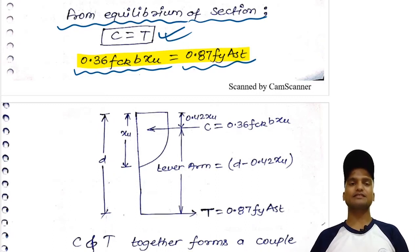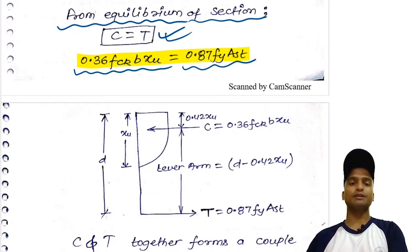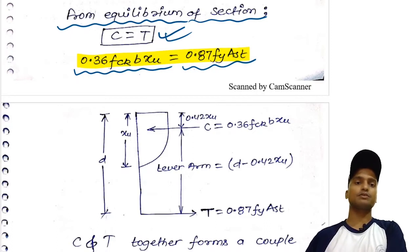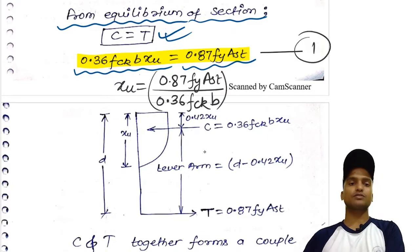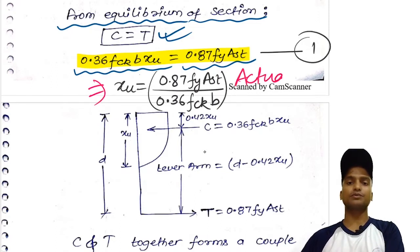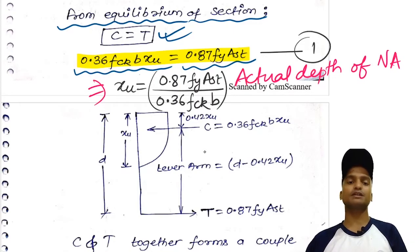Welcome to this next class. Till now we have understood how to calculate the different parameters of the concrete stress block diagram, where we calculated the total compressive force, the depth of that compressive force, and the total tensile force in the steel bar. From equilibrium of the section, compressive force equals tensile force, giving us an equation where the only variable is xu, the depth of neutral axis. From this formula we can get the actual depth of neutral axis if we are given the grade of steel fy, grade of concrete fck, width b, and area of steel reinforcement Ast.